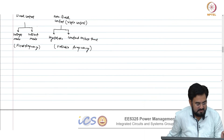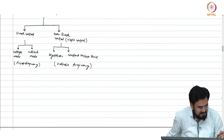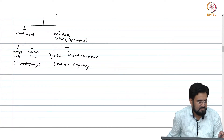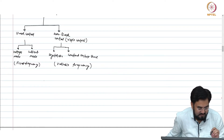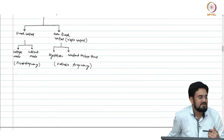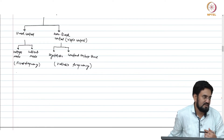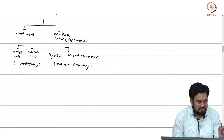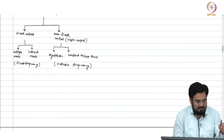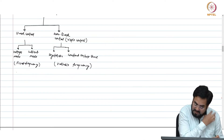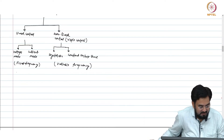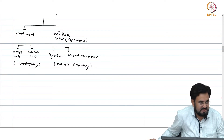We will start with voltage mode control and do all the dynamics with it, and later we will see what happens in current mode. Most buck converters are built using voltage mode, especially if you have a wide range of duty cycle. So our main focus will be voltage mode, but we will briefly cover current mode — how it functions and what compensation it requires.